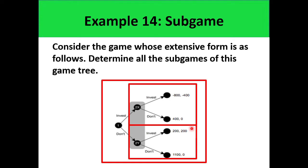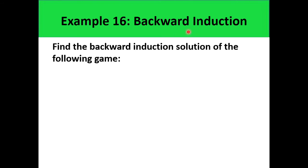Similarly, in the other sub-game, player 2 would choose to invest, because investing gives a payoff of 200 while not investing only gives 0. So this arm will be erased from the tree. After analyzing these two sub-games, we look at the next bigger sub-game — the whole diagram. If player 1 chooses to invest, the payoff is 400; if player 1 chooses not to invest, the payoff is 200. So player 1 would rather choose to invest. That method is called backward induction.